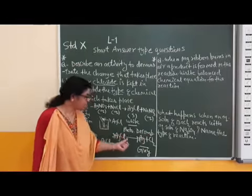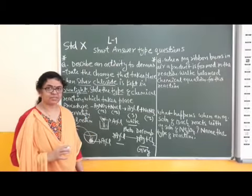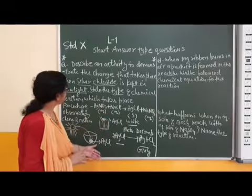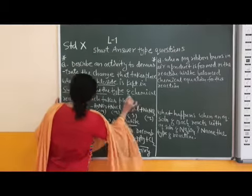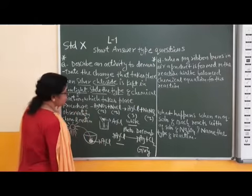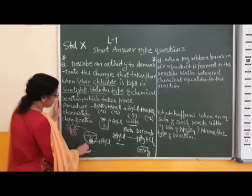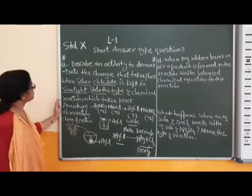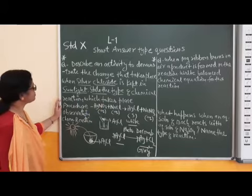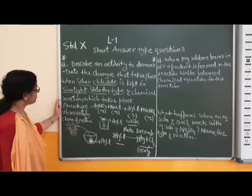The type of this chemical reaction is photochemical decomposition reaction, because silver chloride is a photosensitive compound. This is the complete answer of this activity — the type of chemical reaction is photochemical decomposition reaction.